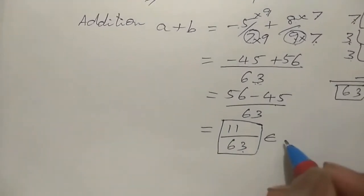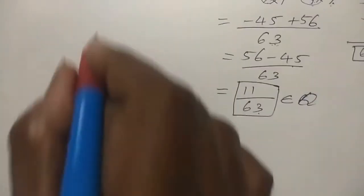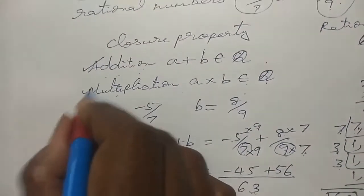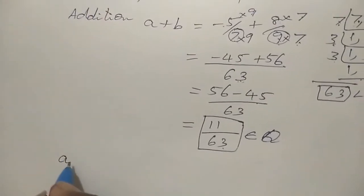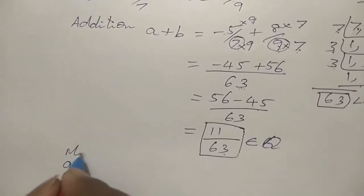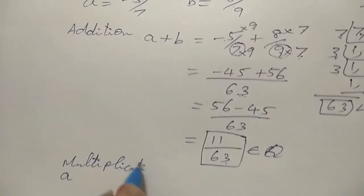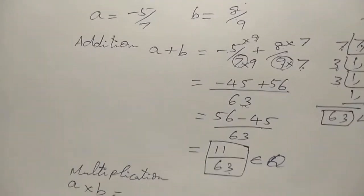Since 11 by 63 is a fraction, it is a rational number. So for the addition side, we have proved closure. Next we go for the multiplication side.